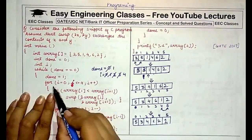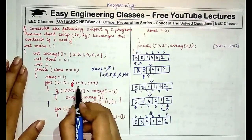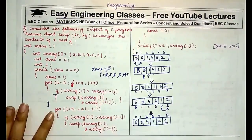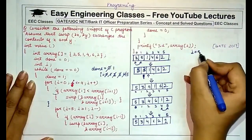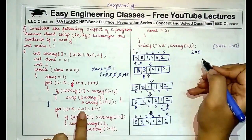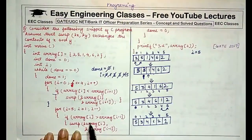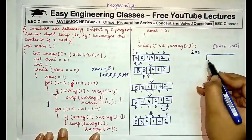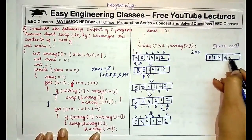When i is incremented again it no longer satisfies i less than or equal to 4, so we exit this loop. In the second loop, i is assigned the value 5. The checking condition is i greater than or equal to 1, and i is decremented. In this for loop, we check if array[i] is greater than array[i-1]. Continuing with the array 5, 3, 4, 6, 2, 1.